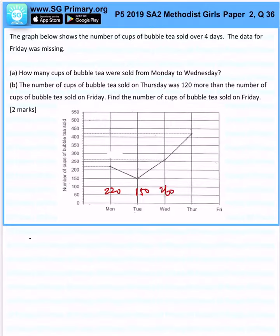So total cups 220 plus 150 plus 260, that will give me 630.